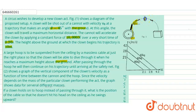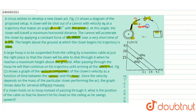At the hoop, the clown has only horizontal velocity — vertical velocity is zero. After passing through the hoop, he continues on his trajectory until arriving at a safety net. The clown's velocity v₀ has a horizontal component v₀·cos45° and a vertical component v_y = v₀·sin45°.